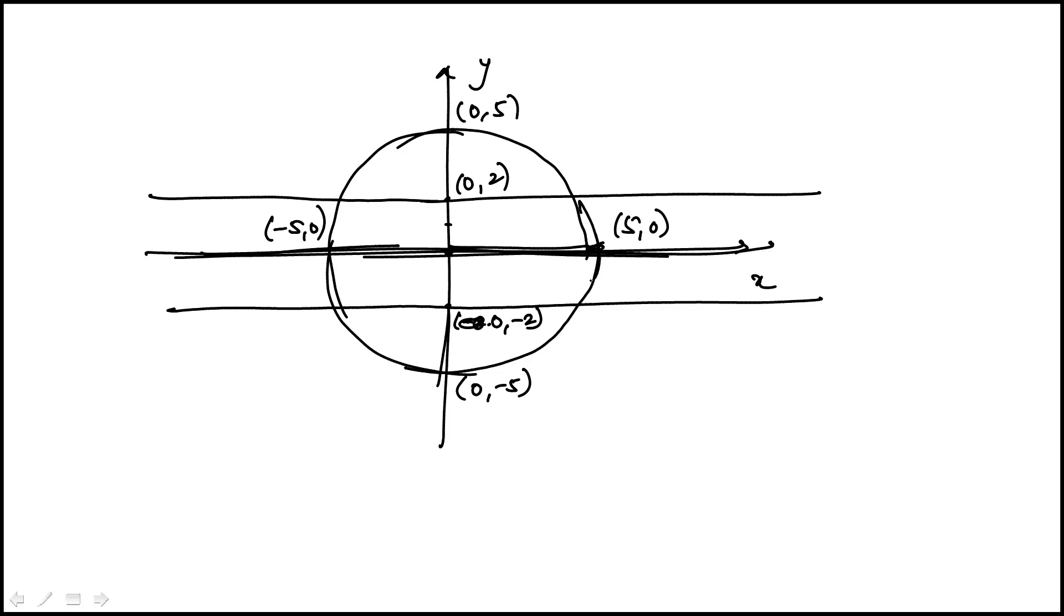And so the question is how many points satisfy both of these conditions? Well, there's this point, that point, just the intersection of the circle and these two horizontal lines.